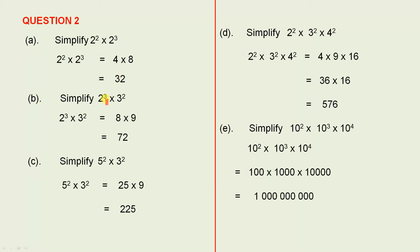Simplify 2 cubed times 3 squared. So we've got 2 cubed times 3 squared. 2 cubed is 2 times 2 times 2, that gives us 8. 3 squared is 9, 8 times 9 is 72.